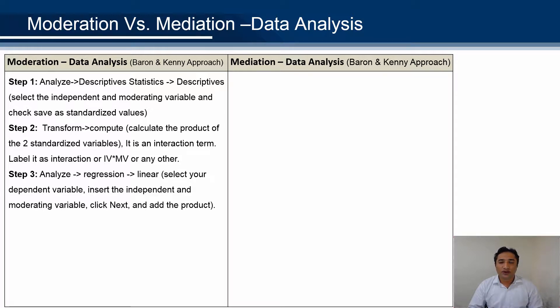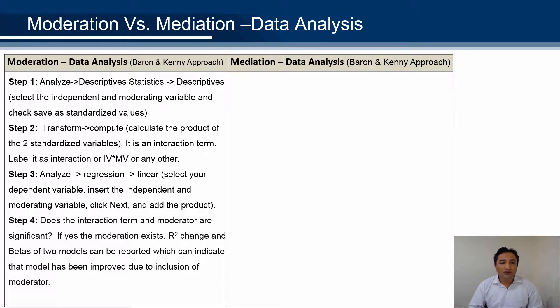Then we run the regression. First, we enter the independent variable and moderator variable in block one. Then we press next and enter the interaction variable in the next block. If the moderator interaction term is significant, then our moderator is significant.